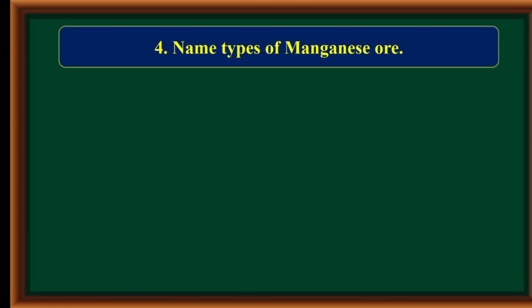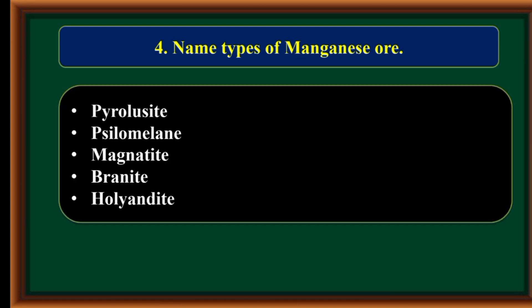Name the types of manganese ore: Pyrolusite, Silomanite, Magnetite, Branite, and Holandite.